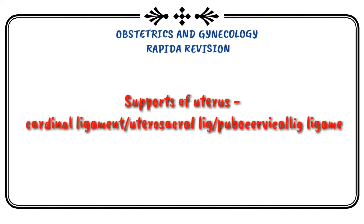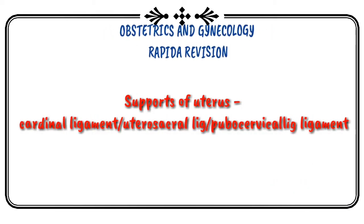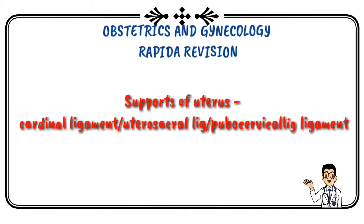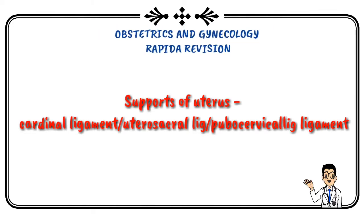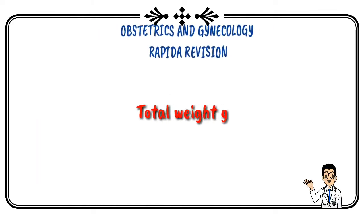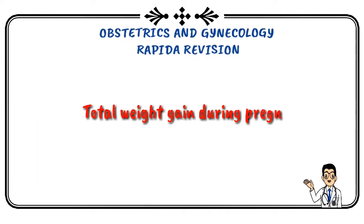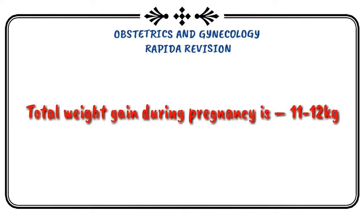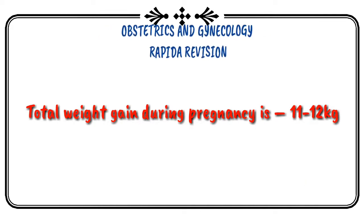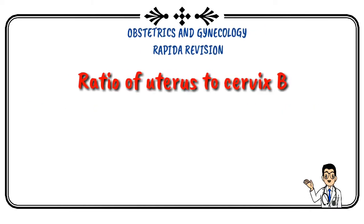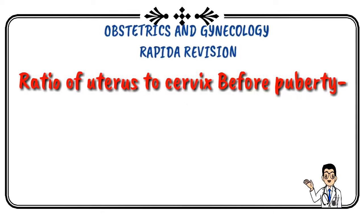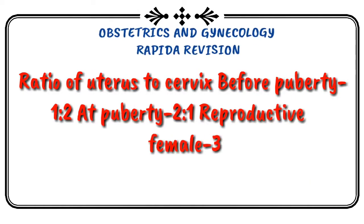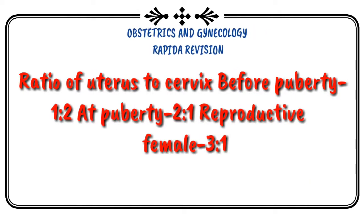Supports of the uterus include cardinal ligament and uterosacral ligament. Total weight gain during pregnancy is 11 to 12 kilograms.